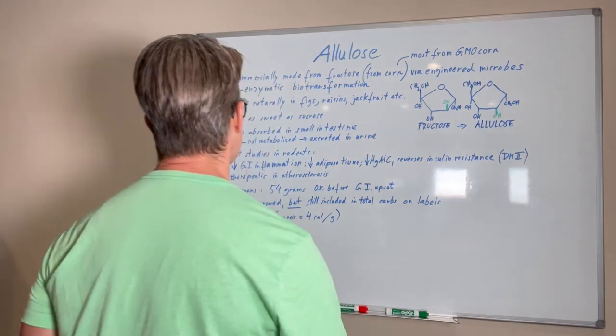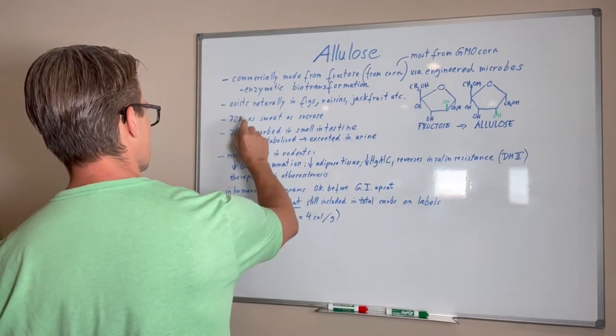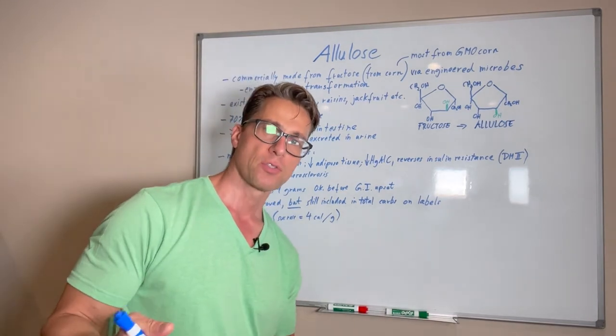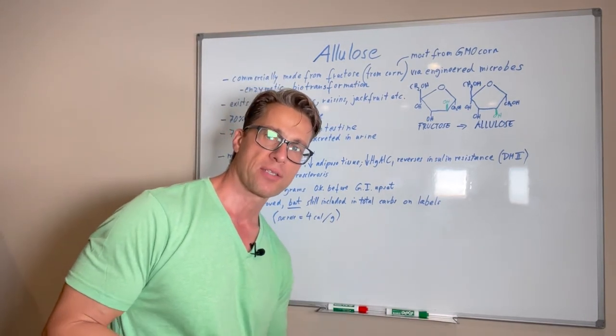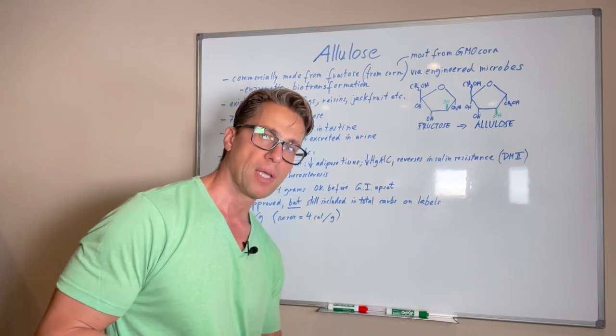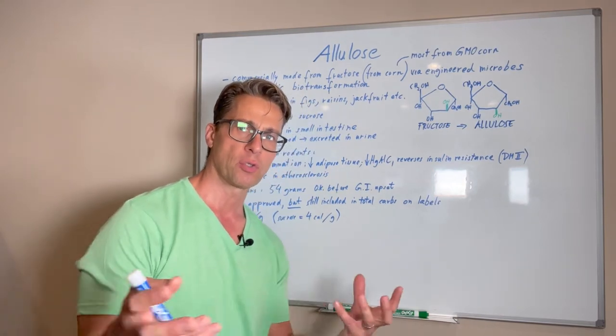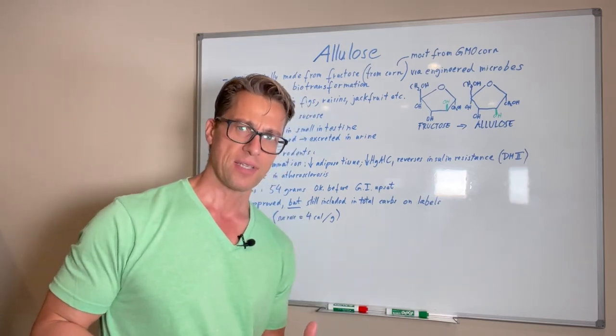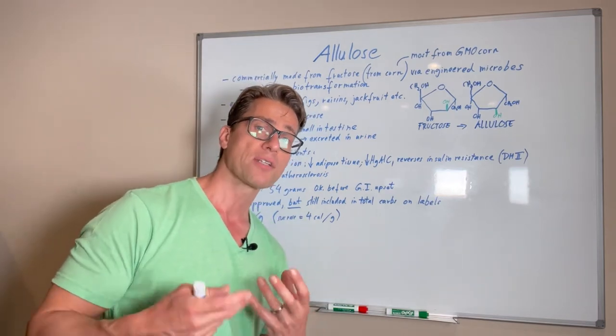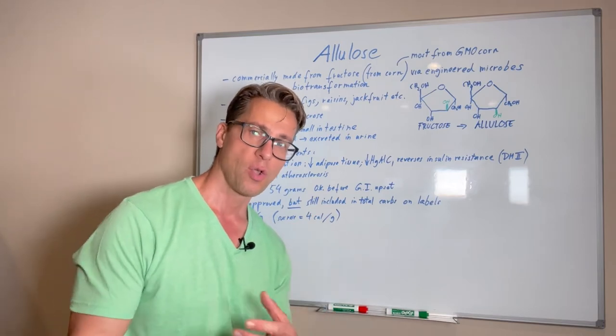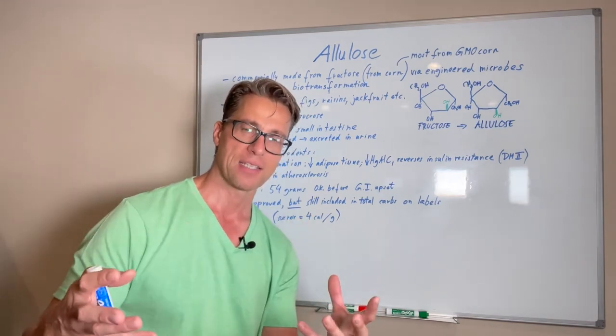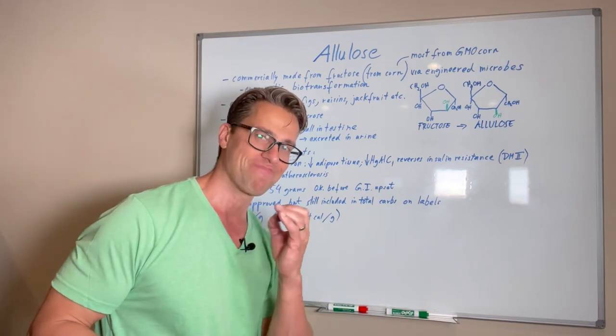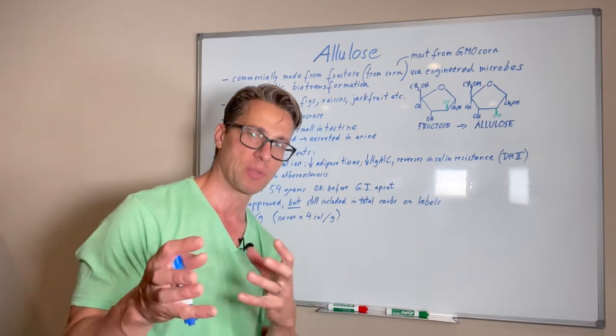So fructose—allulose is about 70% as sweet as sucrose. Sucrose is table sugar, so sucrose basically is a disaccharide—you have glucose and fructose together—and that's kind of a good standard to know. We all know table sugar. It's about 70% as sweet, and that's great because when you look at things like stevia, stevia is about 200 times as sweet as sucrose. So when you're using it for practical purposes for baking and stuff like that, that's kind of harder to dose. That's a lot sweeter and has a certain aftertaste of its own, which some people don't like.